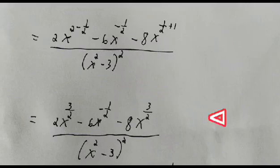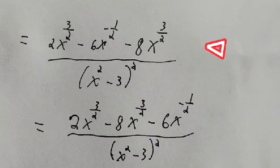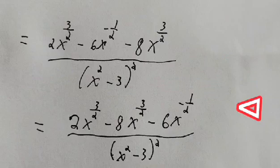Apply addition of exponents: 2x to the power of 3 over 2, minus 6x to the power of negative one-half, minus 8x to the power of 3 over 2. Combine like terms: 2x to the power of 3 over 2 minus 8x to the power of 3 over 2, minus 6x to the power of negative one-half.